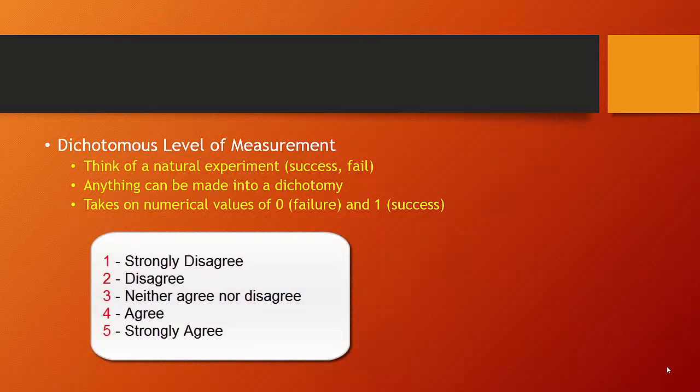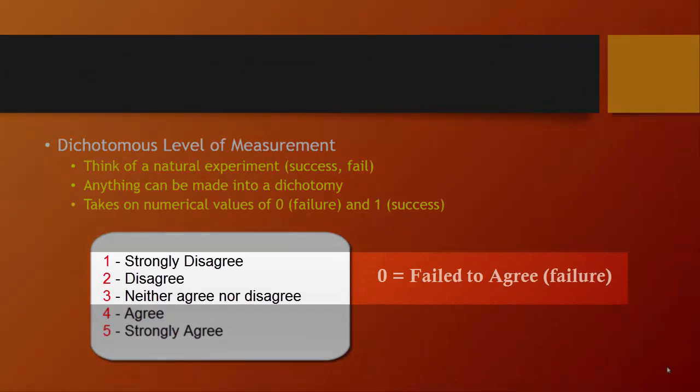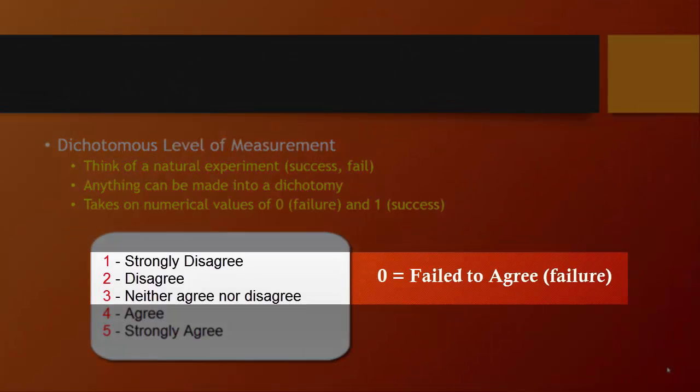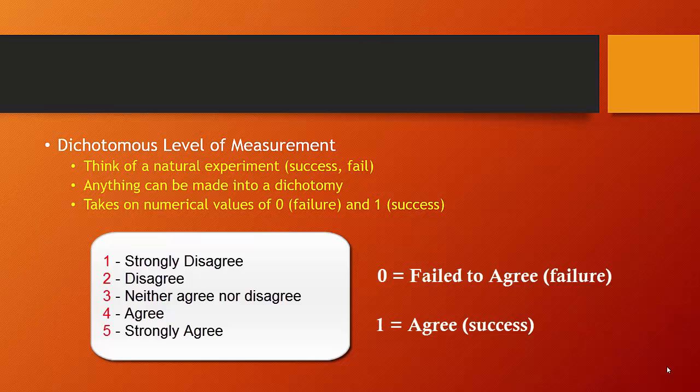Or if you think of an ordinal level of measurement, you can think of one of those strongly agree, agree, neither agree nor disagree, disagree or strongly disagree questions. Take that question and say, I'm going to take everyone who agrees or strongly agrees as having the characteristic agreement and everyone else I'm going to put into the other category fail to agree. Dichotomous variables take on numerical values of zero if you fail to succeed and one if you meet whatever the success condition you've defined for your experiment.